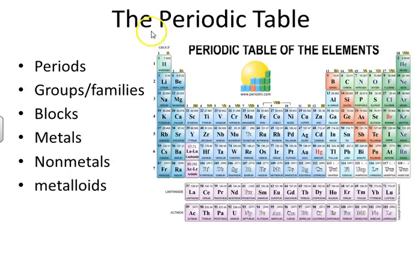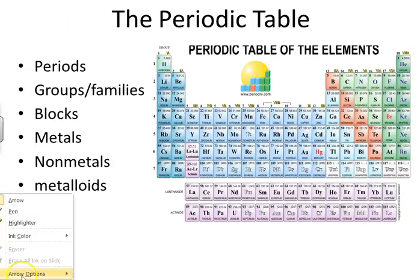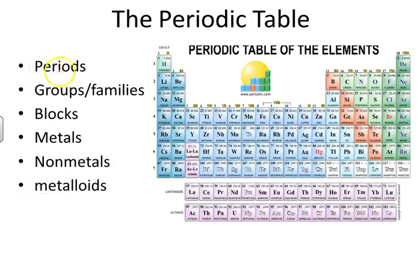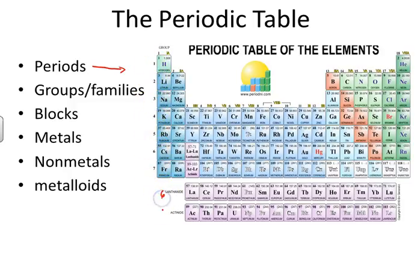A few review terms for the periodic table. First, periods. There are seven periods. Periods are horizontal rows. So we have period 1, 2, 3, 4, 5, 6, 7, and these two rows at the bottom are on period 6 and 7 as well.